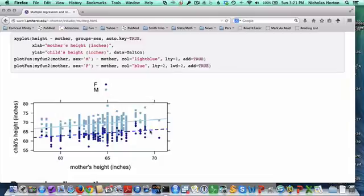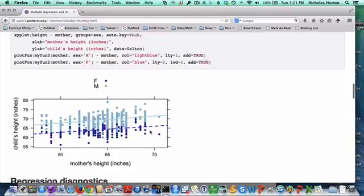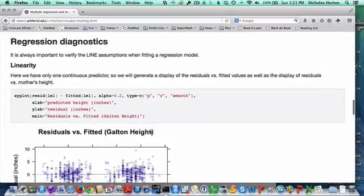In this case, I think that the main effects model does a good job of interpreting and summarizing these relationships. So I'm going to pick the main effects model. And we always need to be thinking about regression diagnostics. These are the LINE assumptions that we've talked about a couple of times.